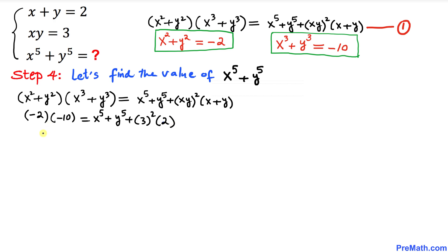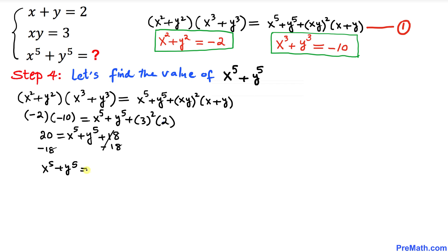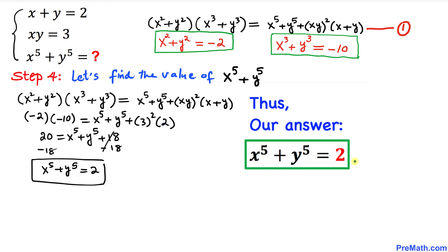After substituting, we compute (xy)² = 3² = 9, and 9 times 2 equals 18. So we get x power 5 plus y power 5 plus 18 equals 20. Subtracting 18 from both sides, x power 5 plus y power 5 turns out to be simply 2. Thanks for watching, and please don't forget to subscribe to my channel for more exciting videos!